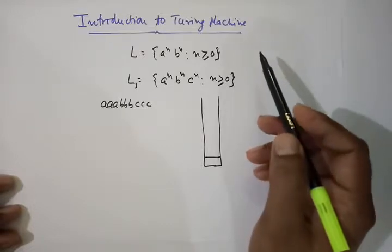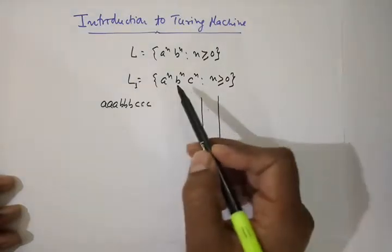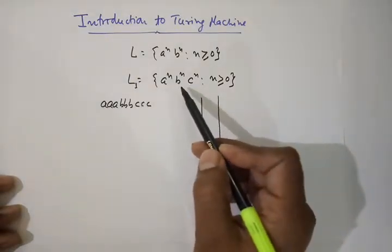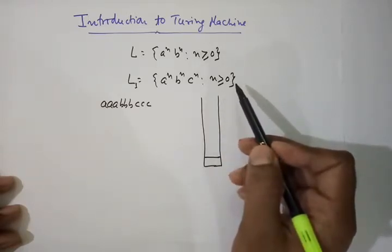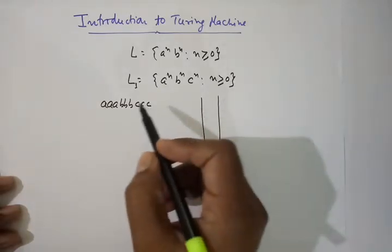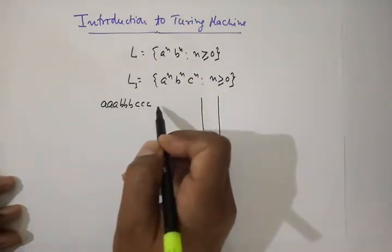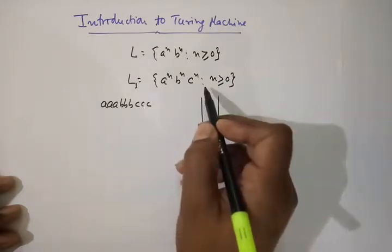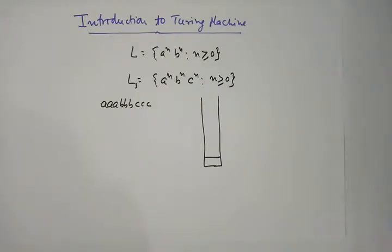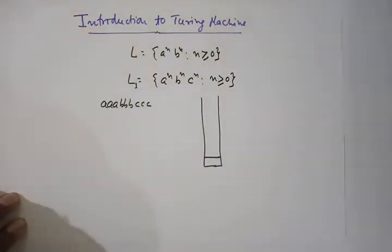But there are some languages which are not even context-free. For example, L1 = a^n b^n c^n such that n ≥ 0. Consider an example string which belongs to this language: three A's, three B's, and three C's. Can we design a pushdown automata for it? No.